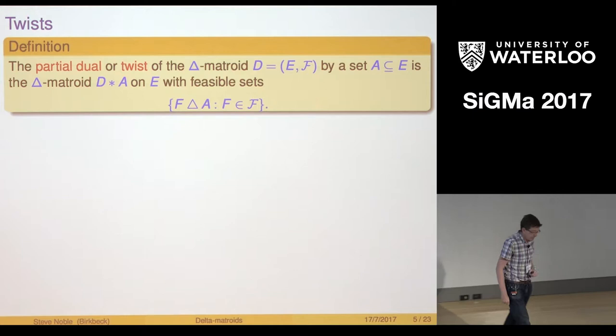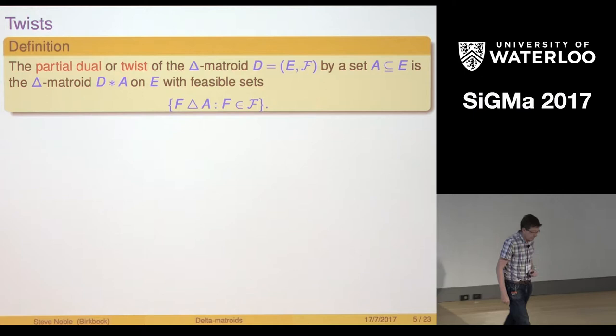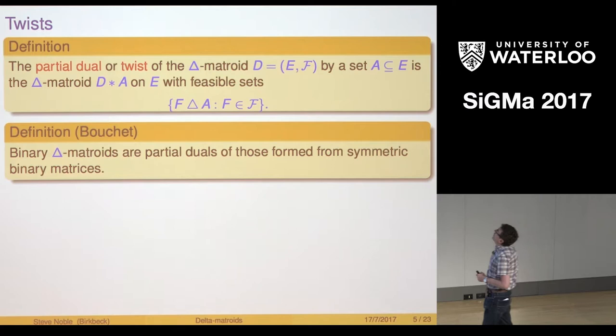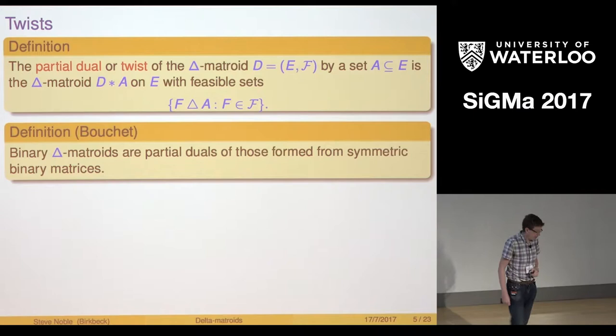This gives me a new Delta Matroid. Easy to see that's a new Delta Matroid. If I took A to be the whole set E and D was a Matroid I'd have taken the dual of the Matroid. Boucher then defines binary Delta Matroids to be the partial duals of those that I just showed you on the previous slide.